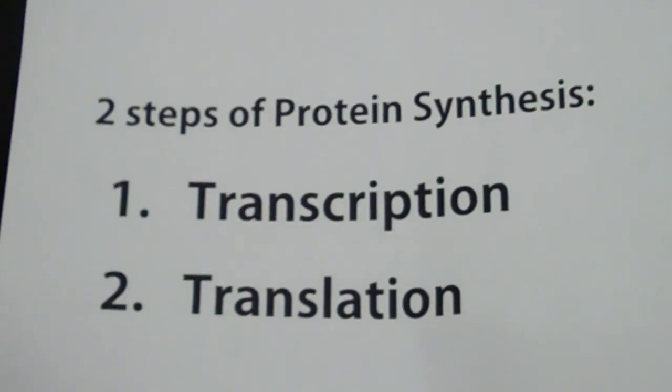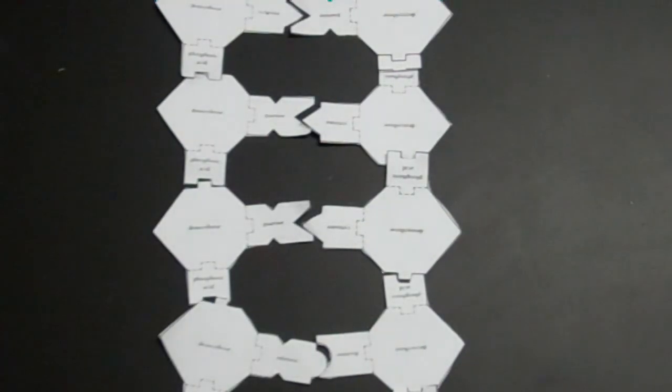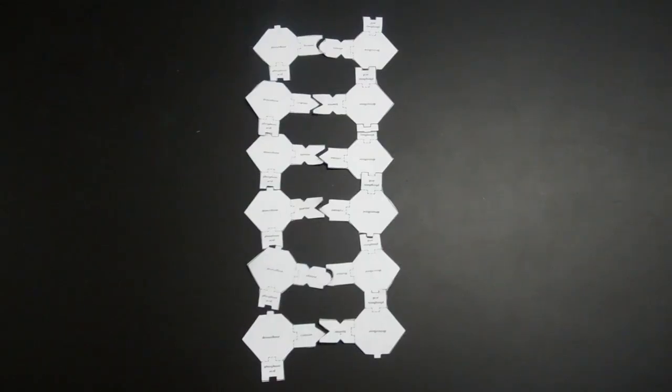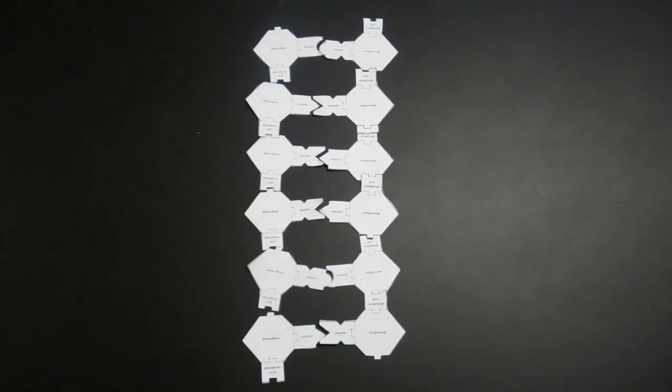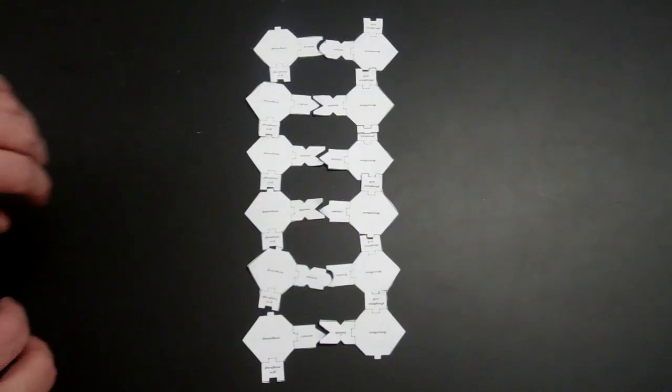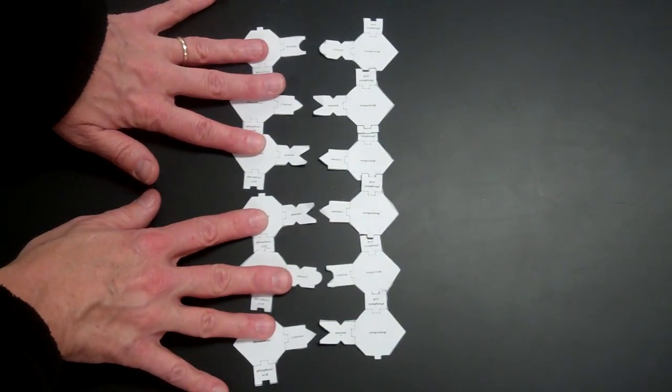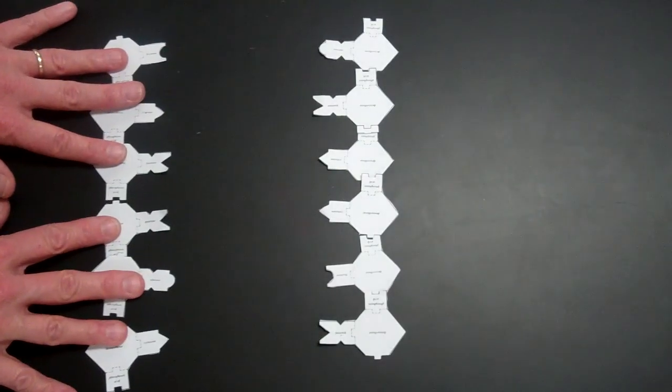Let's begin our process. We're going to start with a paper model of DNA. DNA is in the nucleus. When the protein is going to be made, the DNA will first unzip. That's the first thing that happens in transcription. The DNA unzips.